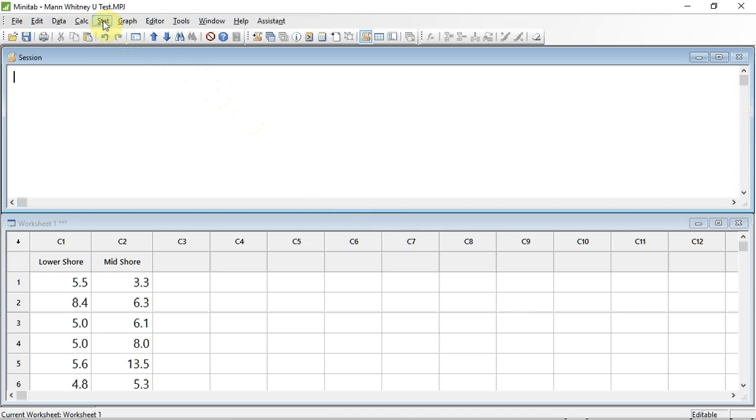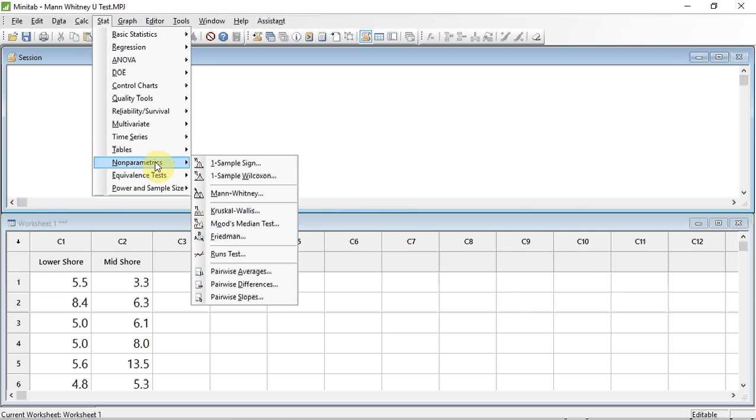We're going to track up to Stat and click, down to Non-parametrics, a sub-list opens, and down to Mann-Whitney, and click.